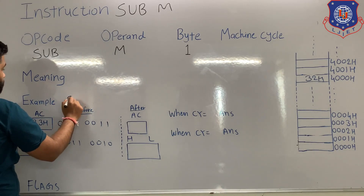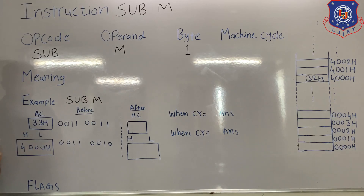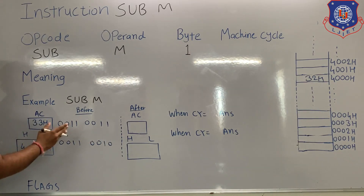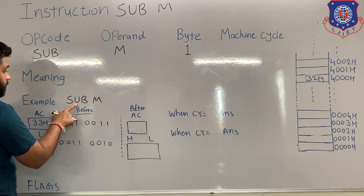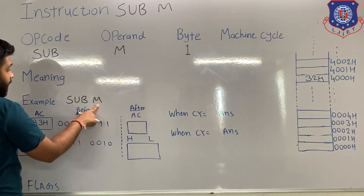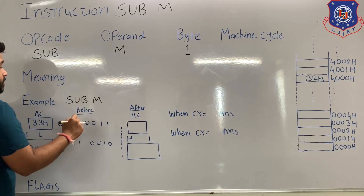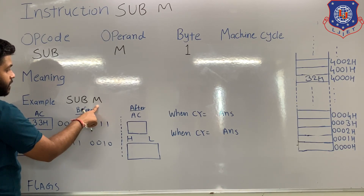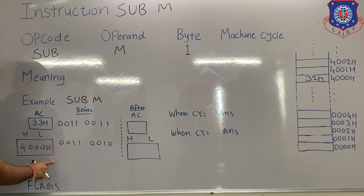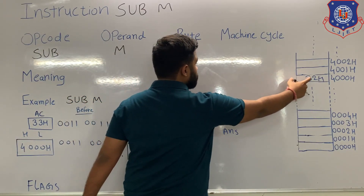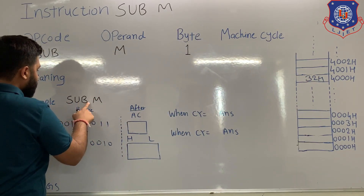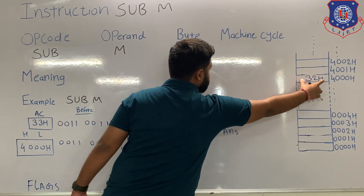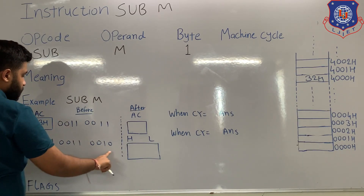Let's see one example: SUB M. Before execution, the content of the accumulator is 33H, represented in binary. The content of the HL pair is 4000H. SUB M means subtract the content of the memory location from the accumulator and store the answer in the accumulator. Since M refers to the memory location specified in the HL pair, and HL = 4000H, the content of memory location 4000H is 32H. So this instruction subtracts the content of memory location 4000H from the accumulator.